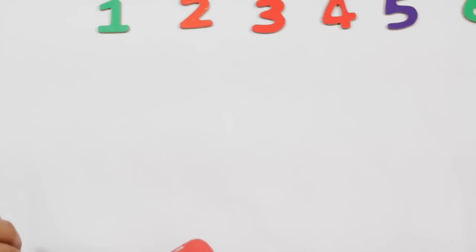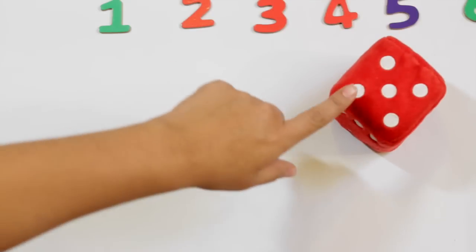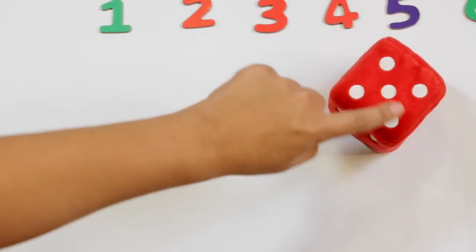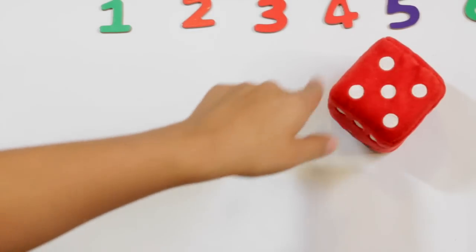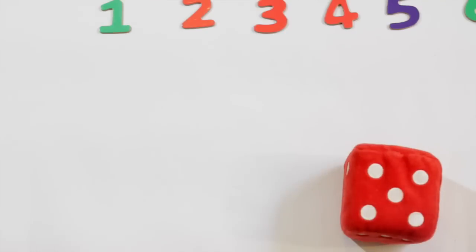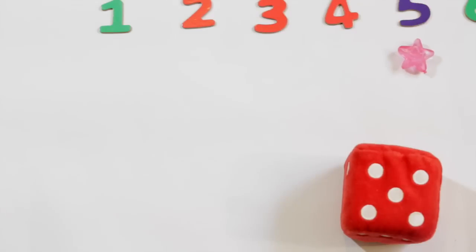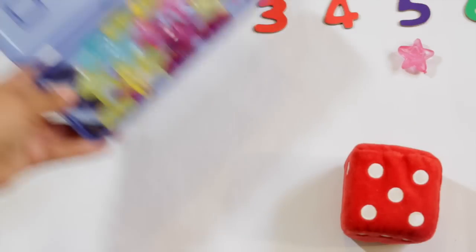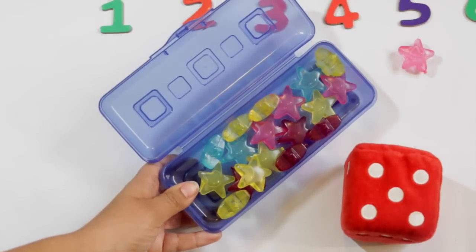Now we are doing a roll and tally kind of activity. So I'm going to roll the dice, or the child's going to roll the dice, and you're going to count together: one, two, three, four, five. Or if the child already knows that is five, that is fine. And then we're going to put one tally underneath the five. In this case, it's stars, so I found these stars.